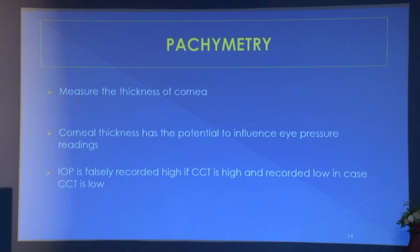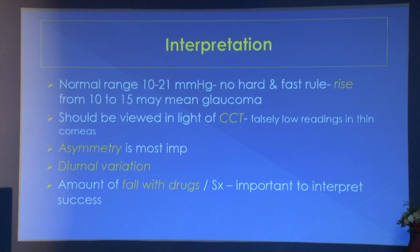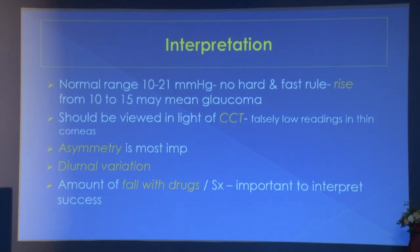Pachymetry is now an essential part of IOP workup — it measures corneal thickness, which can influence eye pressure readings. The normal IOP range is 10 to 20, but this is not a hard and fast rule. A rise from 10 to 15 may indicate glaucoma if the baseline was 10. IOP must be viewed in light of central corneal thickness. Asymmetry is most important, and diurnal variation should not be ignored — many patients diagnosed as normal tension glaucoma may actually be primary open angle glaucoma.